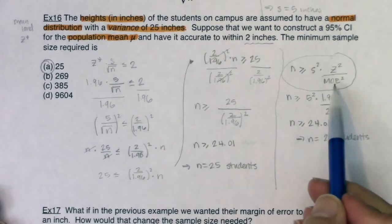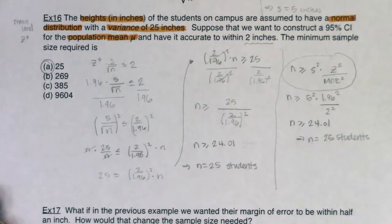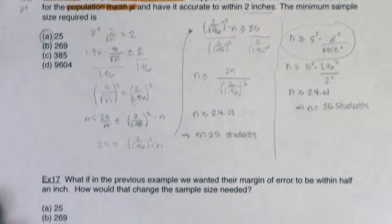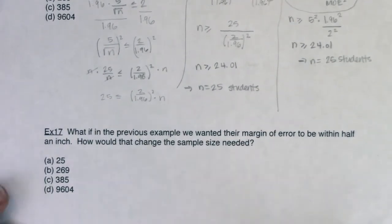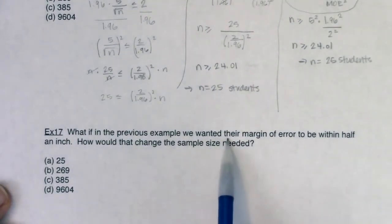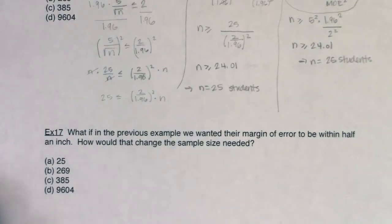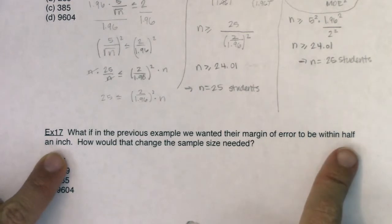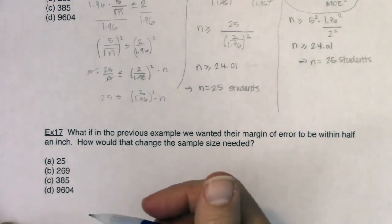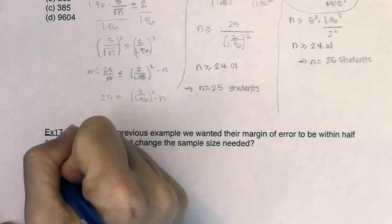And I'll use the formula on this one, just so we have that under our belts. So it says, what if in the previous example, we wanted their margin of error to be within half an inch? How would that change the sample size? All right. So if you want a smaller margin of error, you're going to have to increase your sample size. Increasing sample size reduces variability. And that's exactly what we want to do. We want to reduce our variability from two inches to half an inch. So right off the gate. I know 25 can't be the answer.